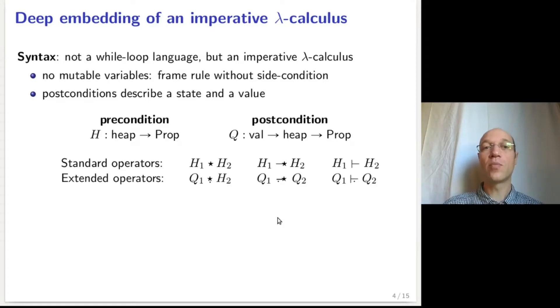Concretely, where preconditions are of the type heap to prop, post-conditions are of type value to heap to prop. The standard operators, such as the star, the magic wand, or entailment, thus need to be extended to a form that operates on post-condition. These are marked with a little dot symbol below the operator.